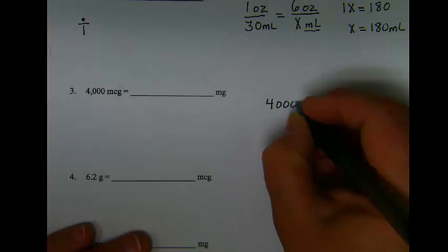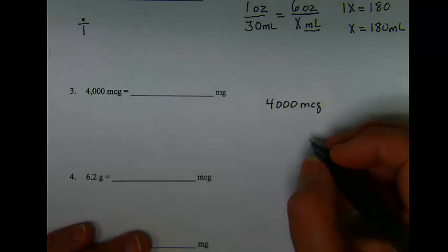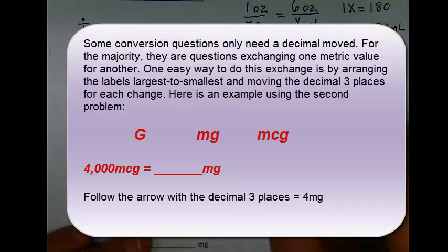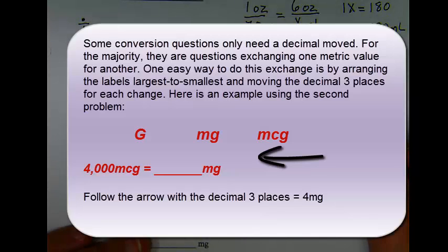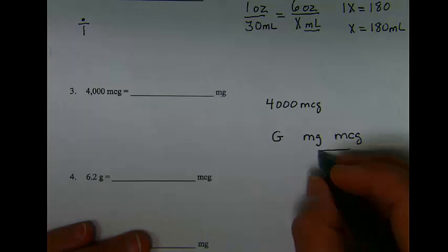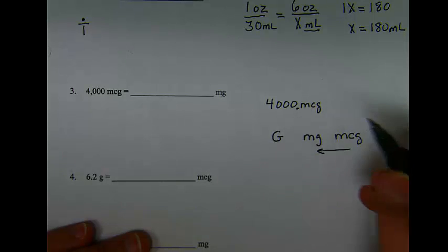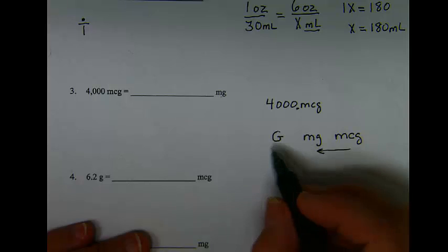In the next problem we have 4000 micrograms. When doing conversions between micrograms, milligrams, grams, or any other unit in the metric system, it's easiest to remember that we're going to use the arrow direction to know which way to move our decimal. In this case, I'm asked to convert to milligrams, so if I have micrograms and I'm going to milligrams, I'm going to the left, which means that's the way my decimal will go. So I'm going to go 3 places for every conversion that I do.